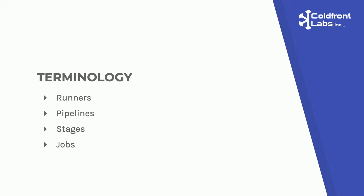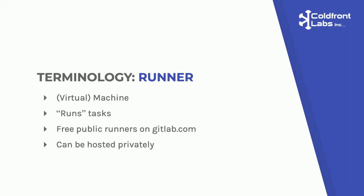Now that we've told you what we use, why we use it, and what we use it for, let's start with some basic terminology. The whole GitLab CI process is broken down into four main things: runners, pipelines, stages, and jobs. A runner is basically a machine — typically a virtual machine — that takes all of your code from your repository, all the instructions in your CI file, and executes any tasks. It runs things.